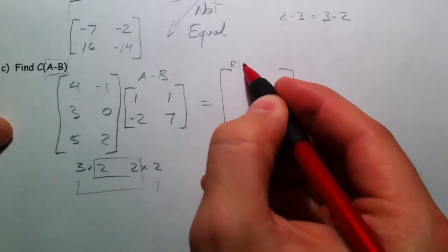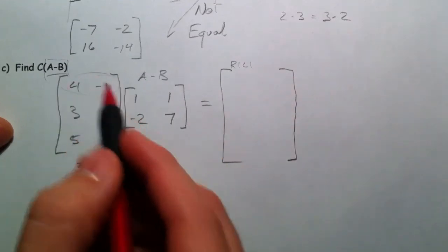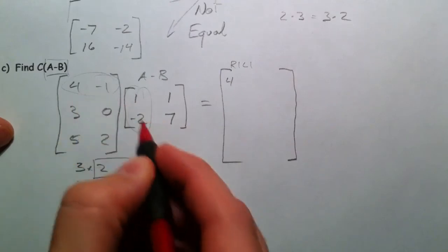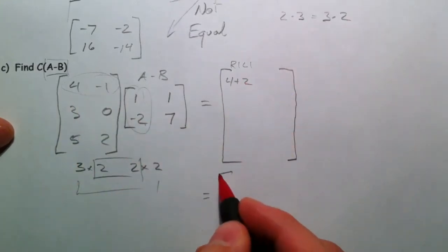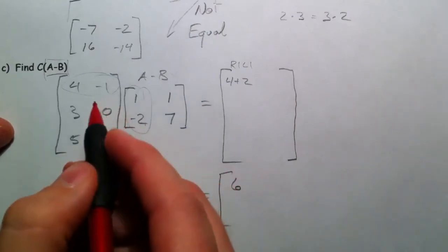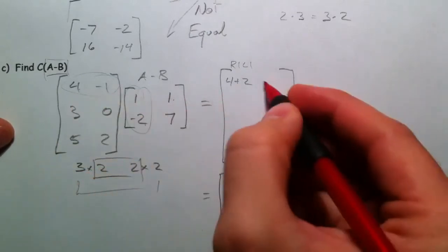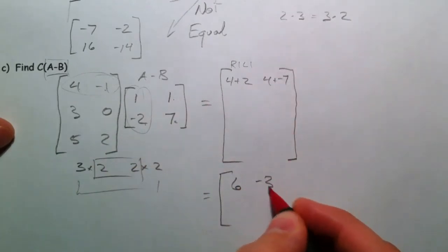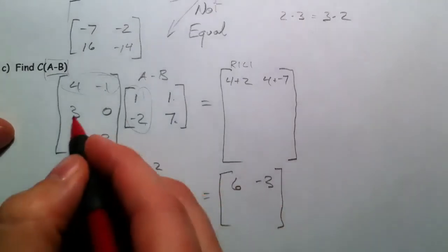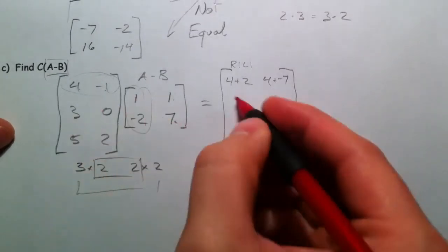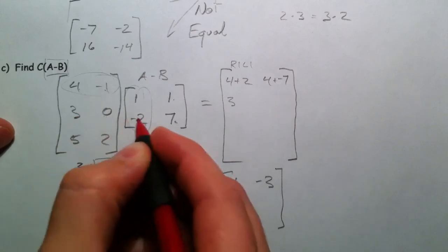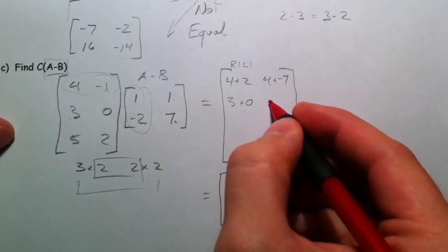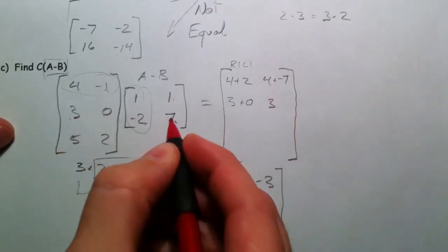So row 1, column 1. 4 times 1, 4 plus 2 is 6. 4 times 1, negative 1 times 7 is negative 3. 3 times 1, 0 times negative 2. 3 times 1, 0 times 7.